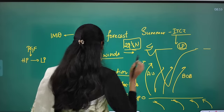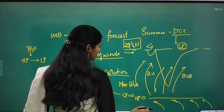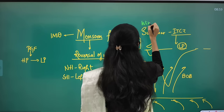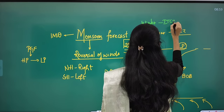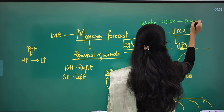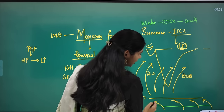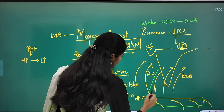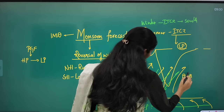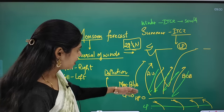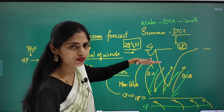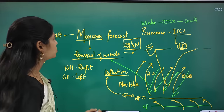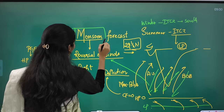This happens in the summer season. In the winter season, the ITCZ moves southward — below the equator — where a low pressure area is formed, and winds move downwards. In summer season they move upward and in winter season they come downward. This is the meaning of reversal of winds, and this is the phenomenon of monsoon.